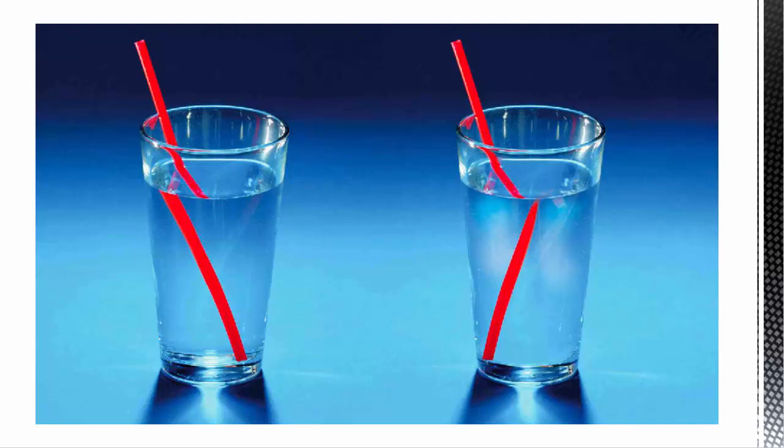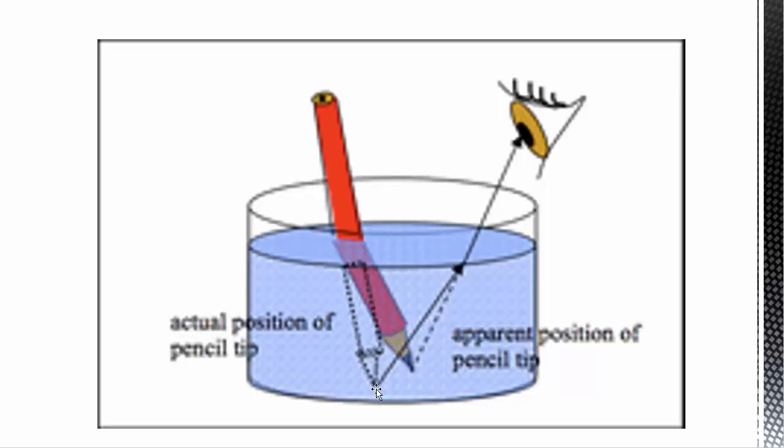So I showed you some similar pictures before, how we get these kind of optical illusions where the straw seems to go this way, and then in the water it seems to go a different direction. What's happening there is that the light is bending or changing directions when it goes from one medium or one material to another.